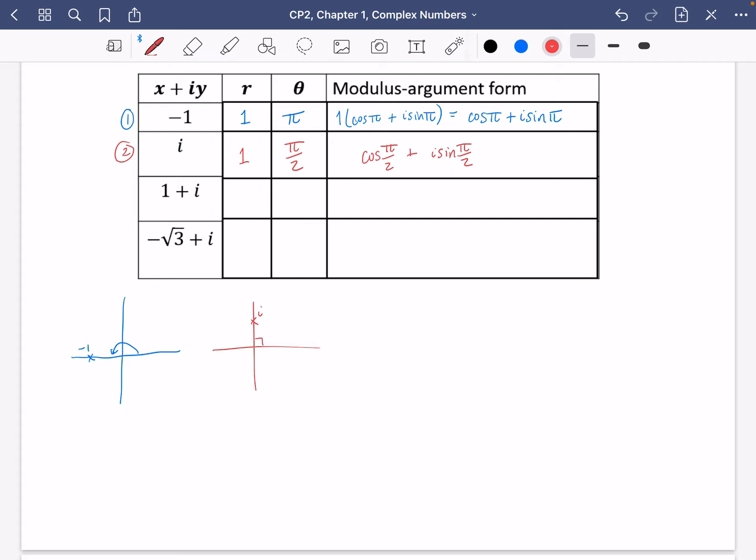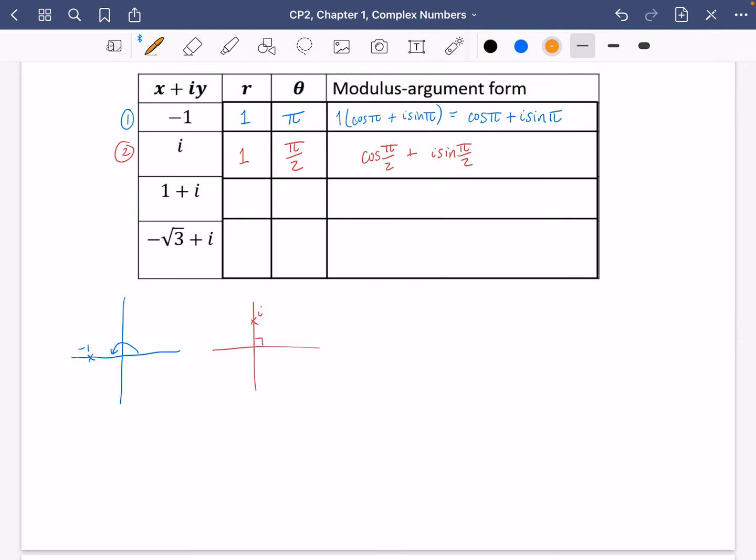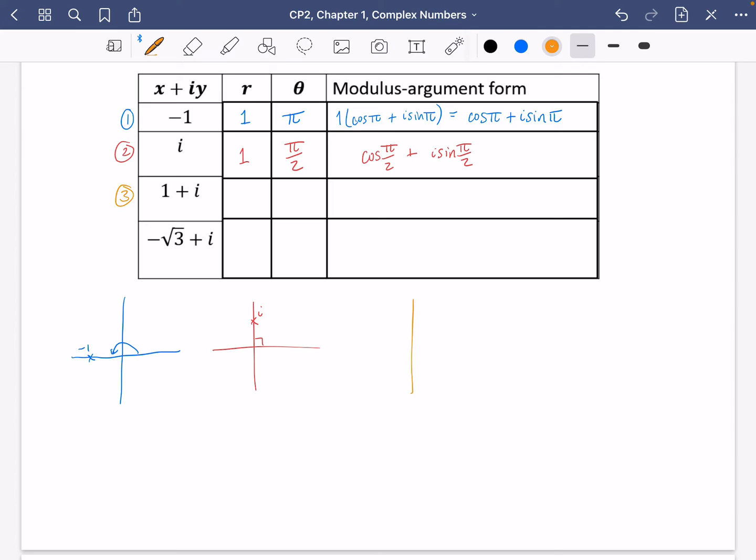For the next one we've got one plus i. I'm going to do a quick sketch just to make sure I get everything right. So it's going to be one to the right and i up here. Here is the complex number. Now r, which is going to be the length of this line, is just going to be one squared plus one squared square rooted, which is square root two. And just through your knowledge of trigonometry, you can see that this angle is going to be 45 degrees or pi over four. So in modulus argument form, it's root two times (cos of pi over four plus i sine of pi over four).